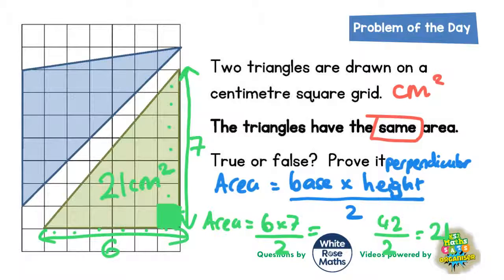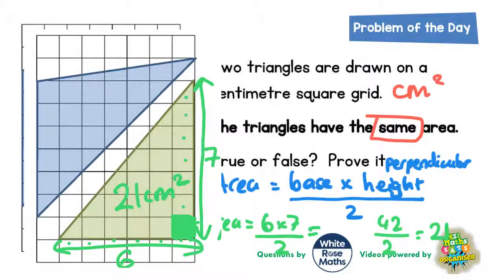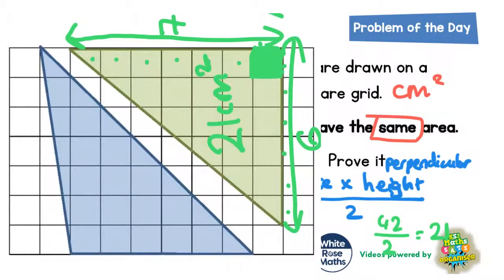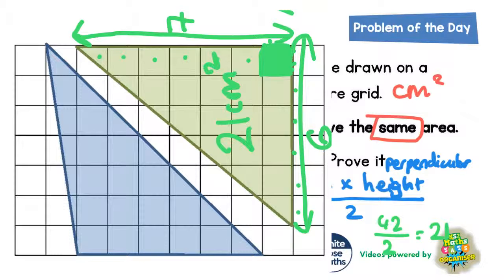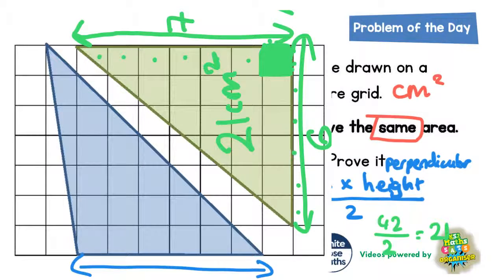For the blue triangle, we don't have a line across the bottom, but we can do something clever — turn the page on its side. I'm going to cut out the grid containing the triangles and turn it sideways. The reason for doing that is so that the blue triangle now has a base along the bottom. It might help you to turn your paper sideways to visualize the base of the triangle.